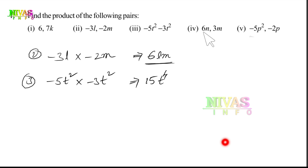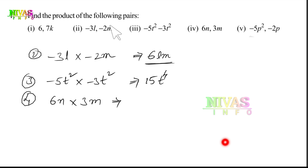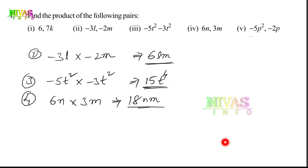Next, the fourth one: 6N into 3M. So 6 into 3 is 18. The answer is 18NM.